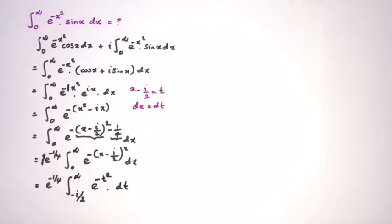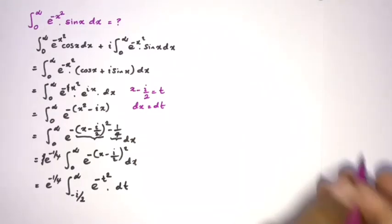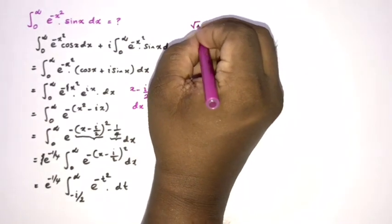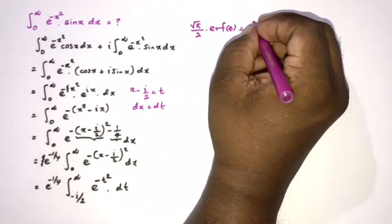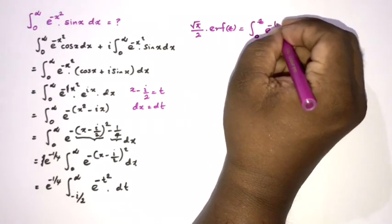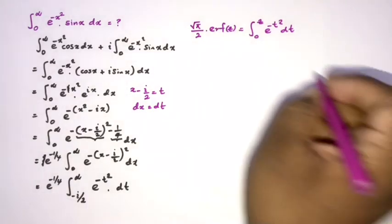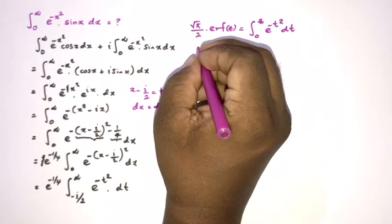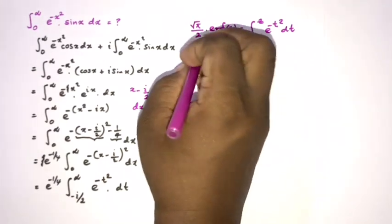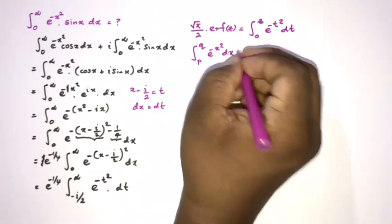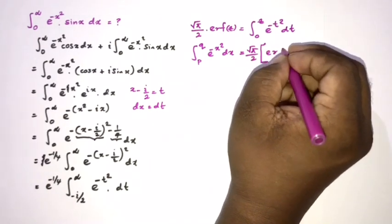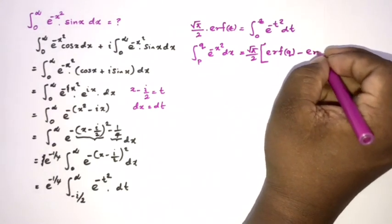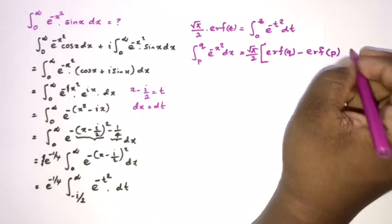This integral is familiar because we know the definition of the error function ERF of c: square root of pi over 2 times ERF of c equals the integral from 0 to c of e to the minus t squared dt. More generally, the integral from p to q of e to the minus x squared dx equals square root of pi over 2 times ERF of q minus ERF of p.